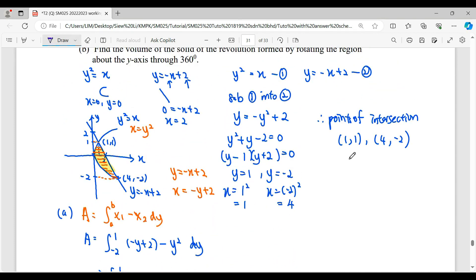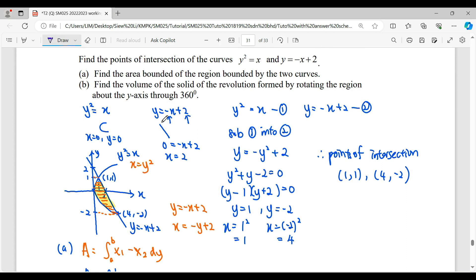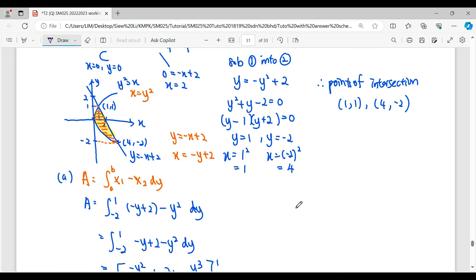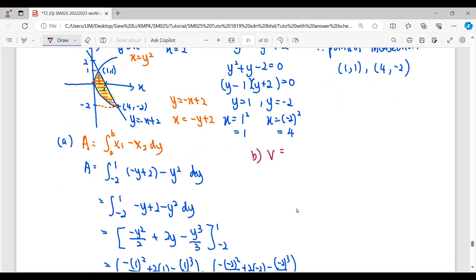Then we proceed for question B. They said find the volume of the solid of the revolution formed by rotating the region. So rotating the region about y-axis through 360 degrees. So volume, formula will be π. So lower limit up to upper limit. Theory of x₁² minus x₂².